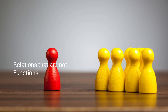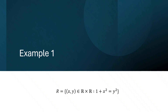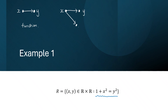In this video, we are going to look at a few examples of relations that are not functions. In our first example, we have a relation R defined on the real numbers. A relation is a function if for every x in the domain, x gets mapped to a single element in the codomain. If we can find any x that gets mapped to two different values — say y and z — then it is not a function.